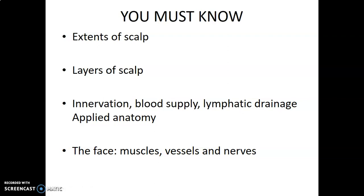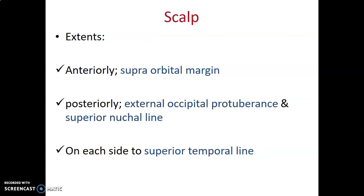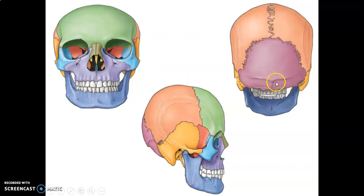The scalp extends from the supraorbital margin anteriorly, up and posteriorly to the external occipital protuberance and the superior nuchal lines, which are landmarks on the skull. On each side the scalp goes down to the superior temporal line — so from the supraorbital margin to the external occipital protuberance and superior nuchal line, and sideways to the superior temporal lines.